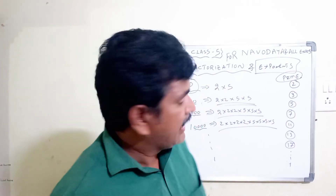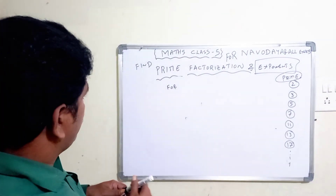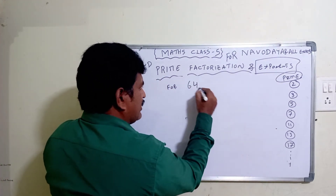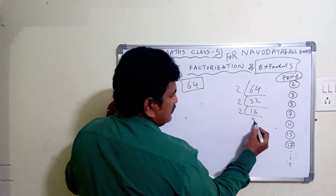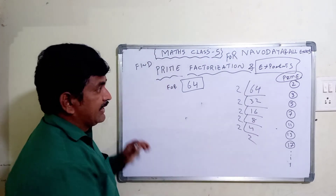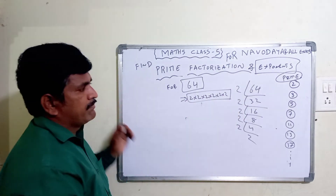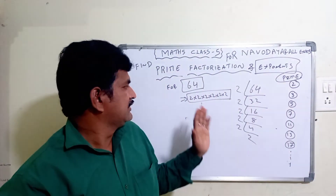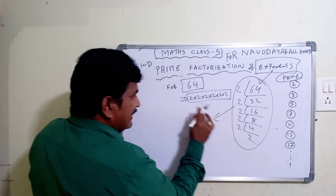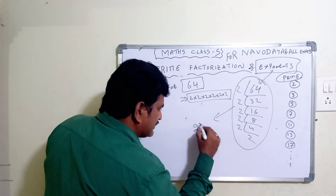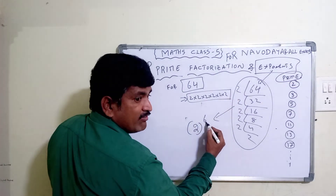In the upcoming video we'll cover exponent form. For now, find the prime factorization for 64. 64 ÷ 2 = 32, ÷ 2 = 16, ÷ 2 = 8, ÷ 2 = 4, ÷ 2 = 2, ÷ 2 = 1. So prime factorization for 64 is 2 × 2 × 2 × 2 × 2 × 2 — that is 2 repeated six times. The base is 2, and the exponent (power) is 6.